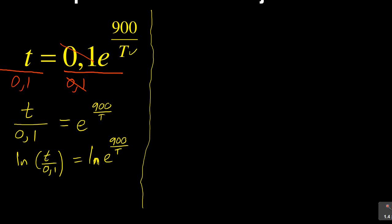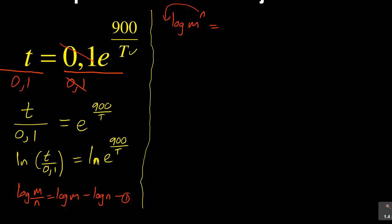You need to know the laws of logarithms. The first law says: log(m/n) is equal to log m minus log n — the assumption here is that everything is in base 10. That law will work in this case for T over 0.1. The second law says: if you are given log of m to the power of n, that is equal to n times log m — the n drops down in front. Again, the base in this case is 10.